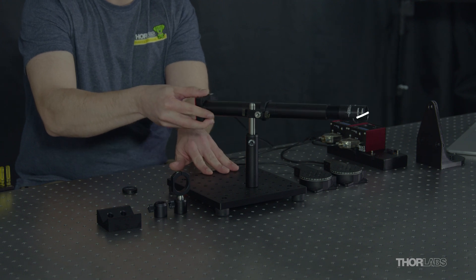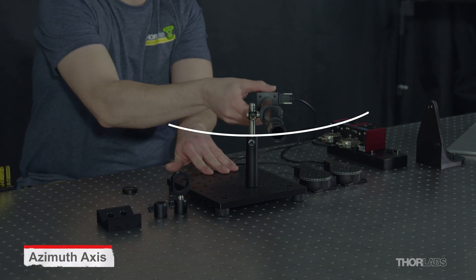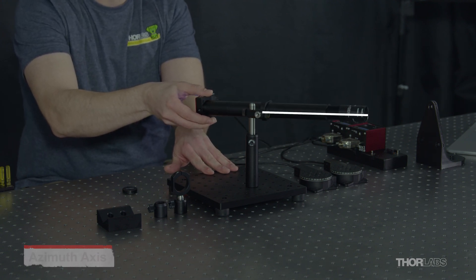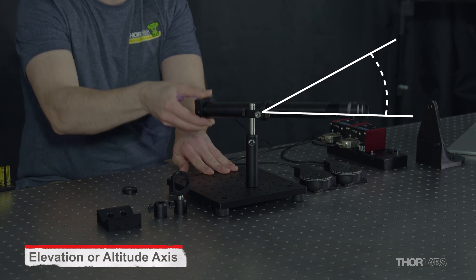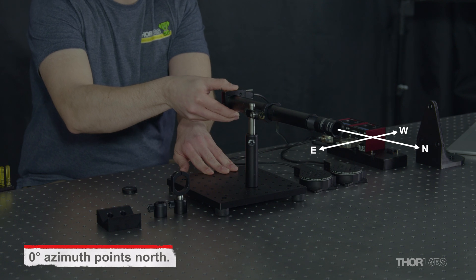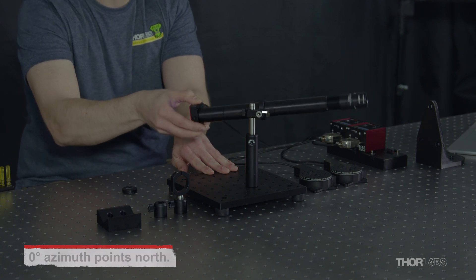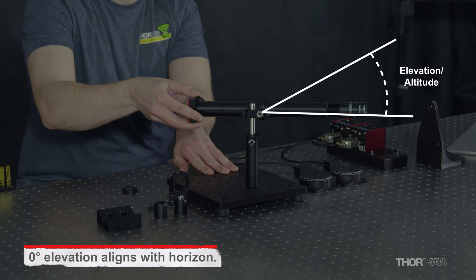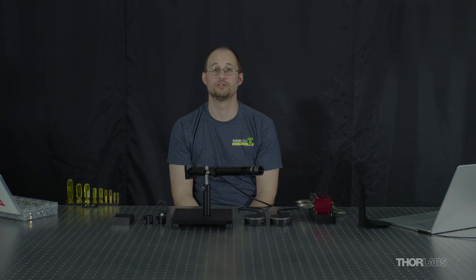In this, we have our azimuth axis, which is swiveling from side to side, and our elevation or altitude axis, which is swiveling up and down. For our azimuth, zero degrees would align with north, and for elevation, zero degrees aligns with the horizon. Now let's remove our assembly from the post and motorize it.